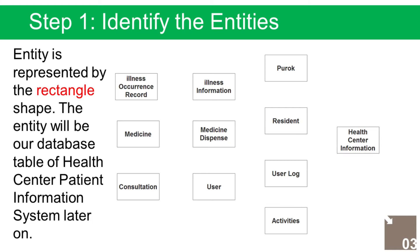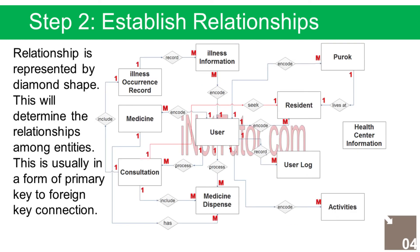The entities identified are: 1. User, 2. User Log, 3. Activities, 4. Illness Information, 5. Illness Occurrence Record, 6. Medicine, 7. Medicine Dispense, 8. Consultation, 9. Resident, 10. Poroch.